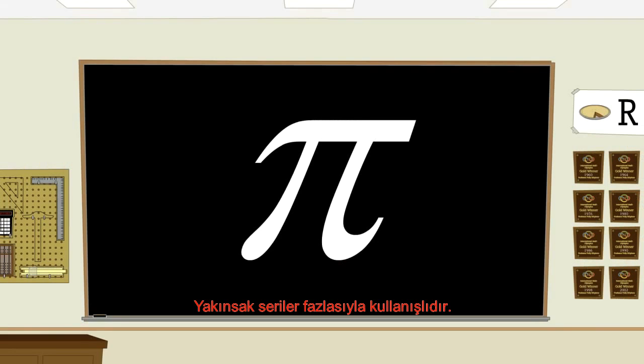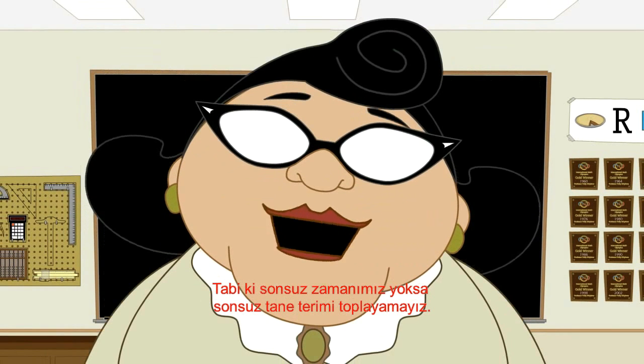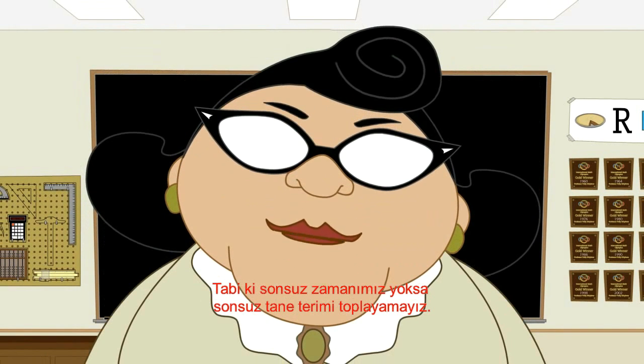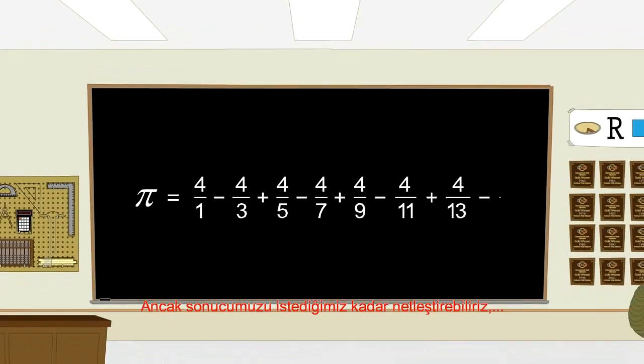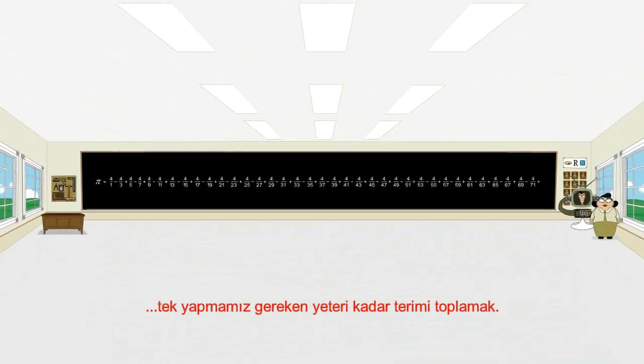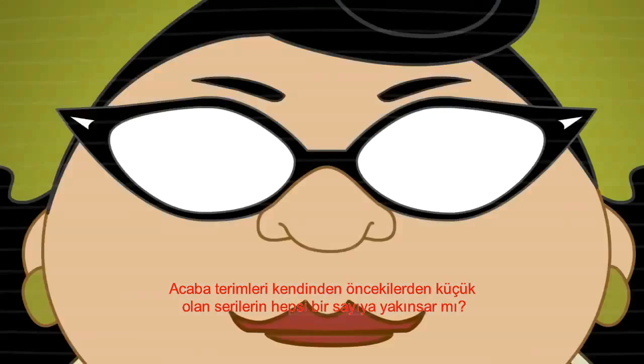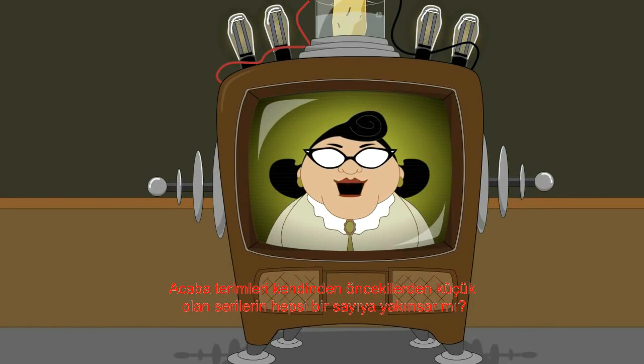Convergent series are very useful. Some numbers like pi can only be calculated by using convergent infinite series. Here are the first few terms of an infinite series which can be used to calculate pi. Of course, we can't actually add an infinite number of terms unless we had an infinite amount of time. However, we can make our answer as accurate as we like by simply adding enough terms.